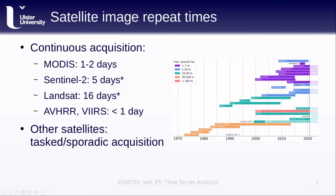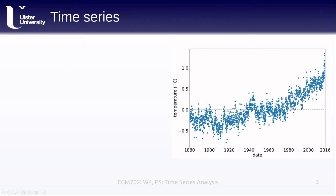Other satellites are not acquiring continuously — each time they pass over a point on the ground they are not taking an image unless they are being specifically tasked to do so. For example, the SPOT satellites and all the different WorldView and GeoEye satellites are tasked; they're not giving us repeat acquisitions unless that is part of their current instructions.